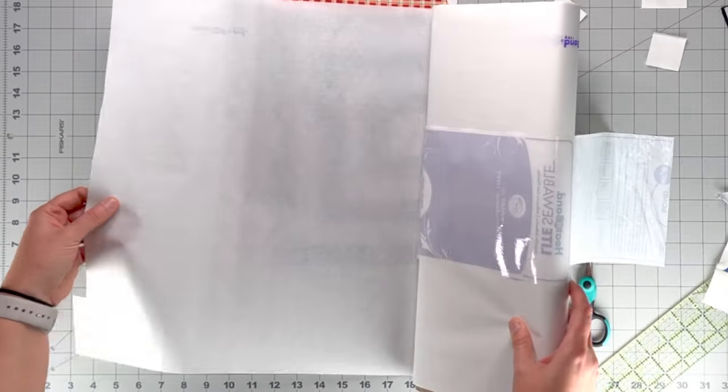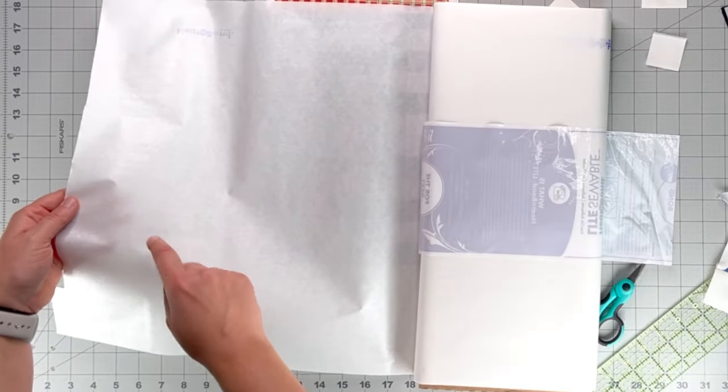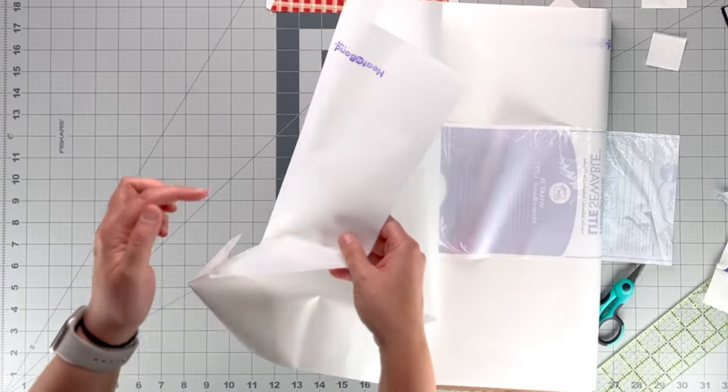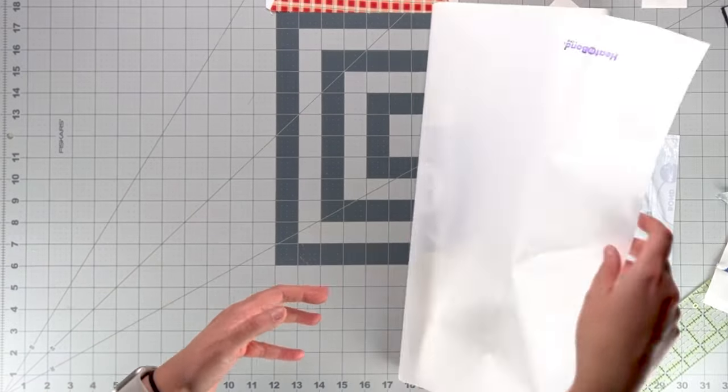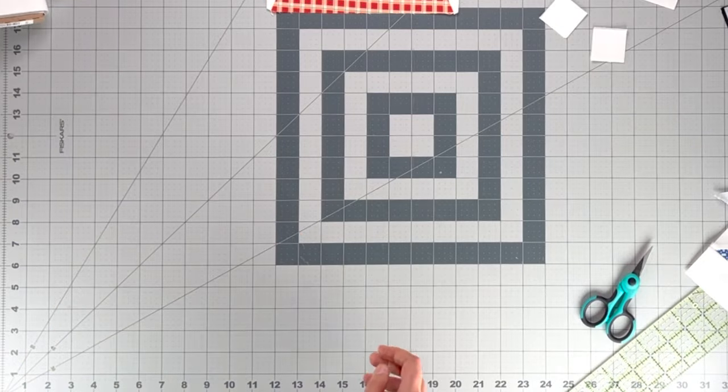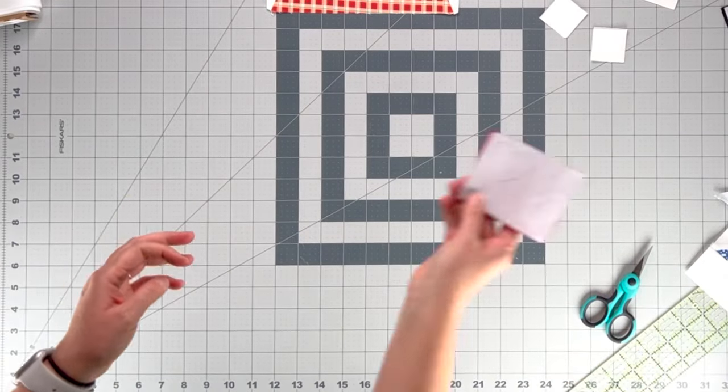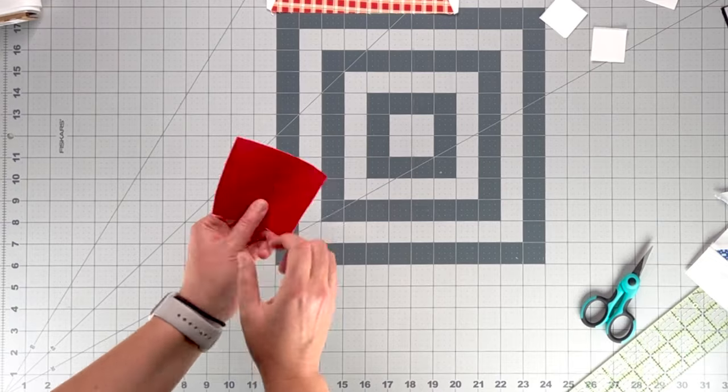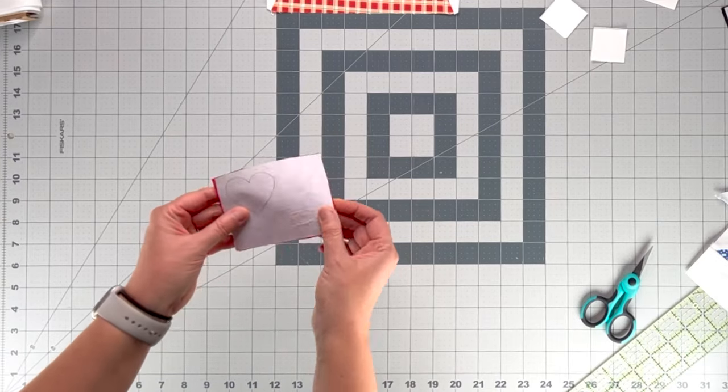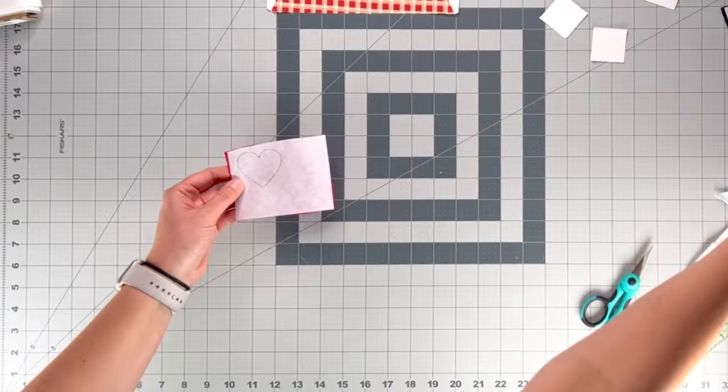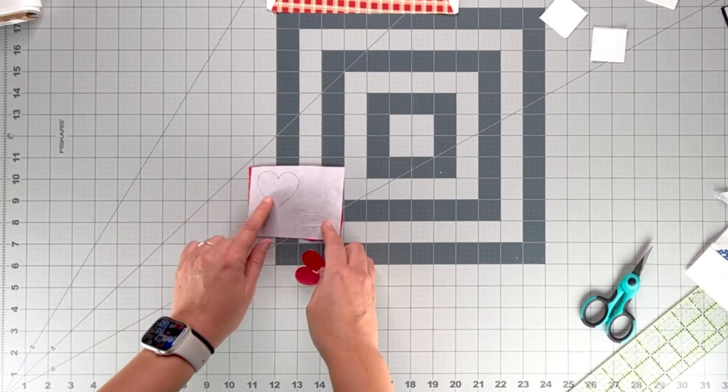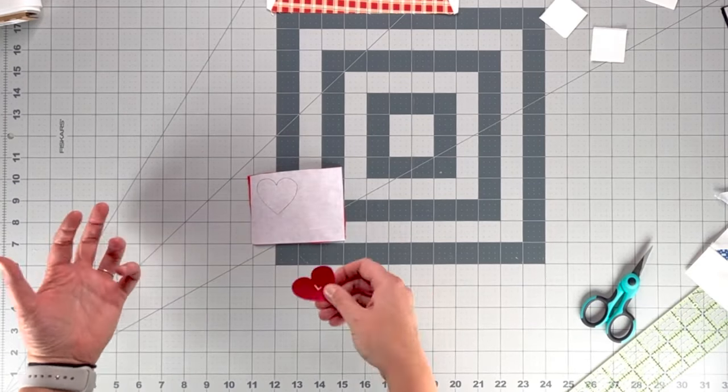And basically what it is, is it has a glue surface on one side and a paper on the other. And so when you fuse it with a warm iron to the back of whatever fabric that you're using, it will go ahead and stick to that fabric. And it also stabilizes the edges so they don't fray as much when you're washing it.